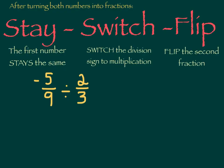Another way to think about this — kind of a shortcut to help you remember the method for dividing — is stay, switch, flip. After you've turned both numbers into fractions, which is really important to do first, the first number stays the same, then you switch the division sign to multiplication, and you flip the second fraction. So: stay, switch, flip.